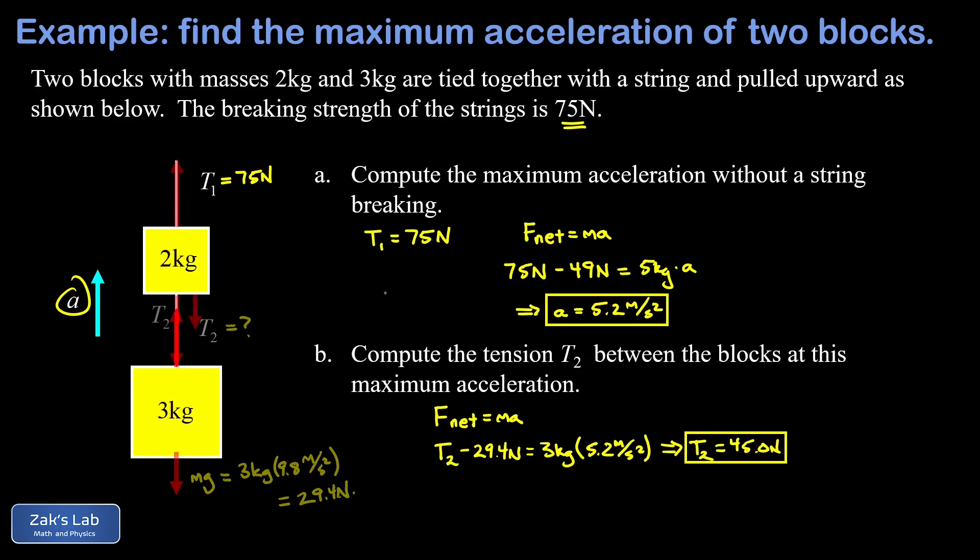Now I don't want to quit without showing you how you can check your work in a problem like this. What we're going to do is a complete force analysis on the two kilogram block and then if we find the same acceleration that was observed in part A we know everything is fitting together here. So we just found that T2 is 45.0 newtons - that's pulling down on the two kilogram block.